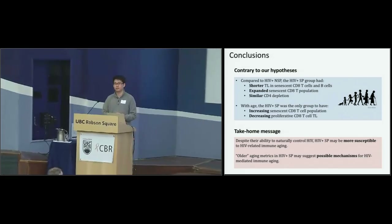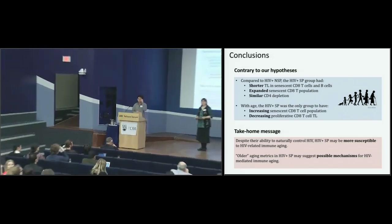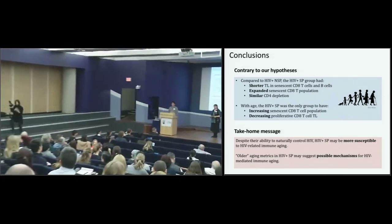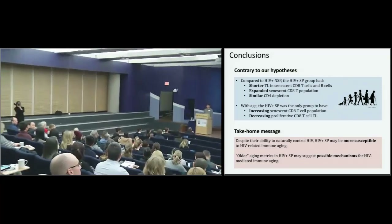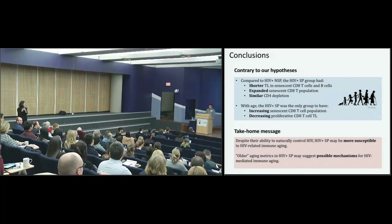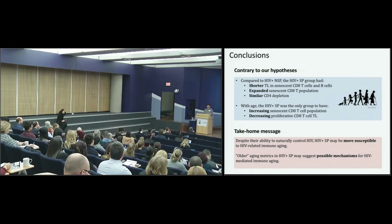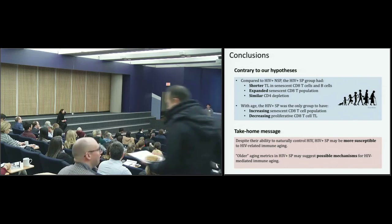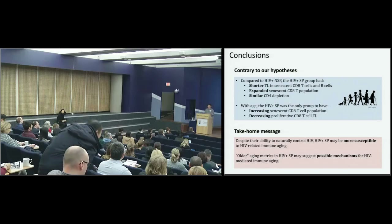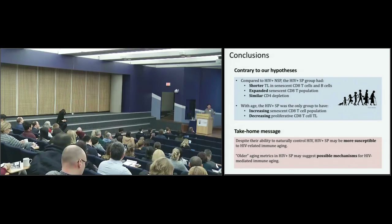Great talk. Do you think that if slow progressors were on antiretroviral agents, CART, would that ameliorate the accelerated aging you're seeing? I think so. The slow progressors who were treated with antiretrovirals would probably just look like non-slow progressors who had HIV, because the non-slow progressor group have their HIV very well controlled — their CD4s are high and their HIV is undetectable. That's actually what's happening in the world today. A few years ago, the WHO guideline changed: it used to be that if you could control HIV naturally, you didn't need drugs, but as side effects became less severe and detectable viremia was recognized as problematic, all slow progressors are now being treated with antiretrovirals.